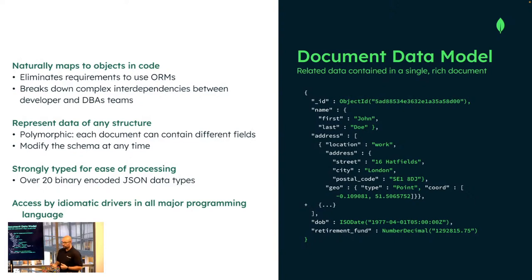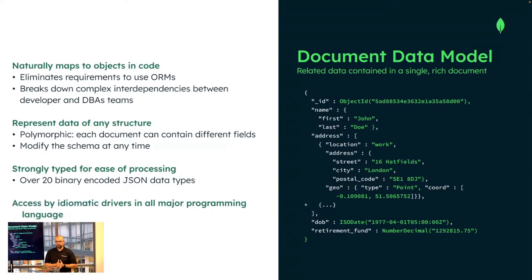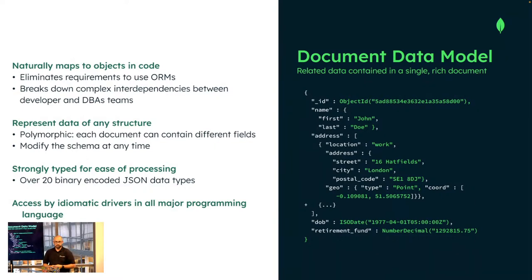Why is this good for developers? It limits the overhead of having to switch context every time you're working with data in the database. With SQL, you usually have some kind of object-relational mapper, requiring mapping between objects in your code and data in your database. In the relational world, you might need to fetch a user profile from different tables, meaning you need to understand the whole relational model. We mitigate that by storing data in the database the same way it's accessed in your application.